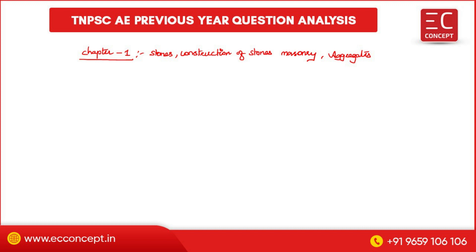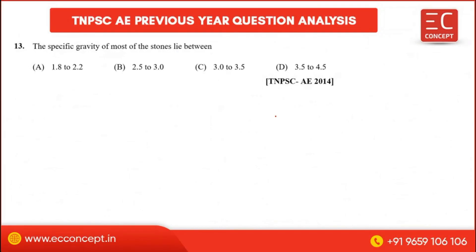Welcome back to Easy Concept. The specific gravity of most stones lies between certain values. For example, granite has a specific gravity of 2.7, and marble has a specific gravity of 2.65.